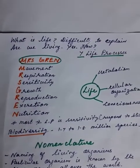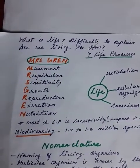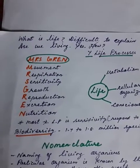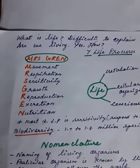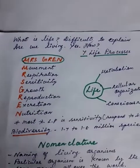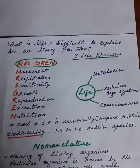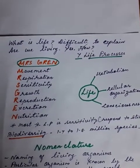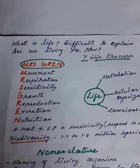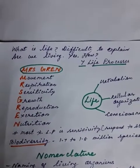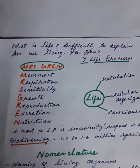Here is an easy way to remember using the mnemonic MRS GREEN: M stands for movement, R for respiration, S for sensitivity, G for growth, R for reproduction, E for excretion, N for nutrition. These are the life processes. Based on these, if an organism undergoes them, we can say it is a living organism.